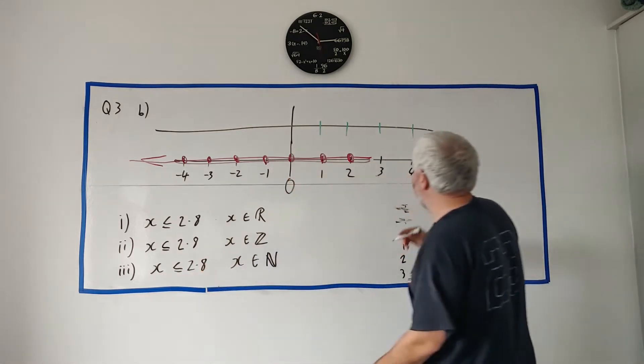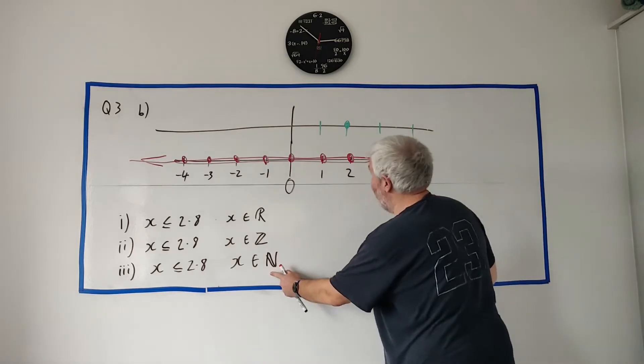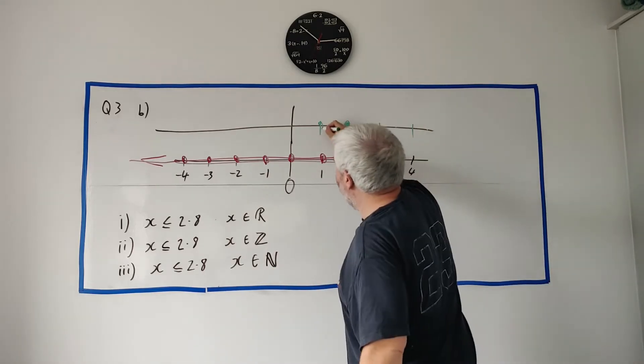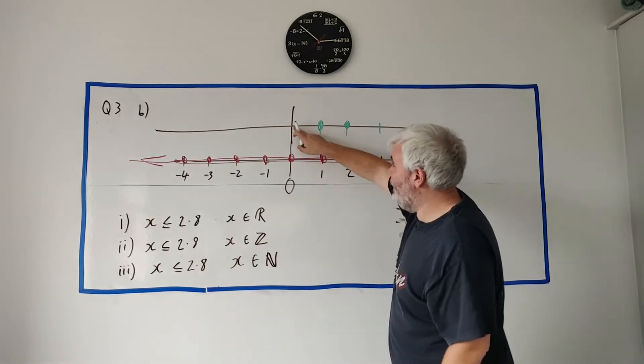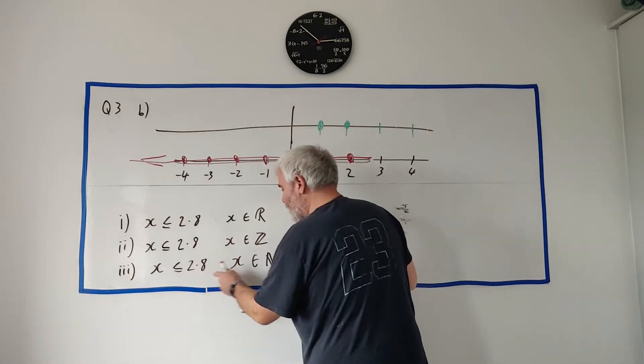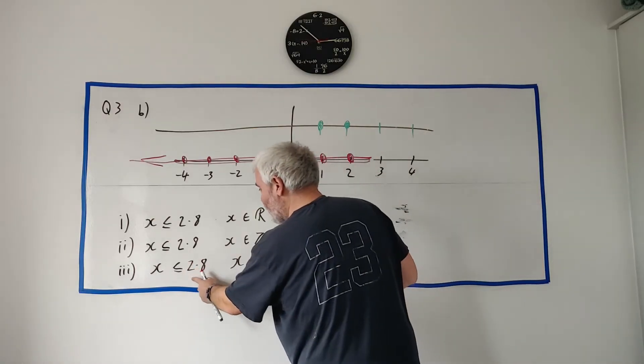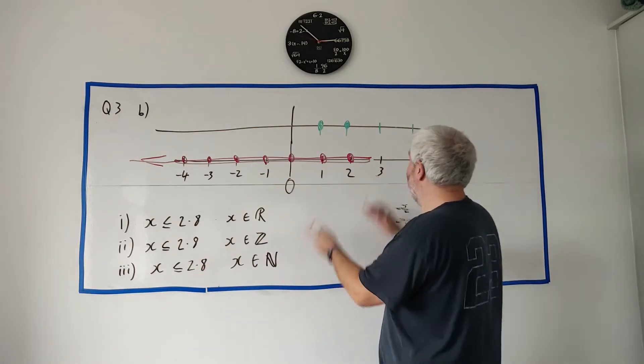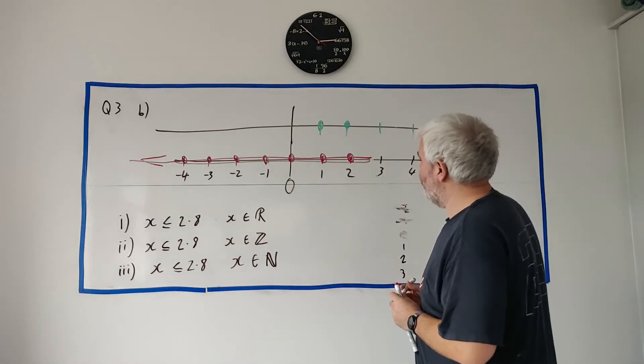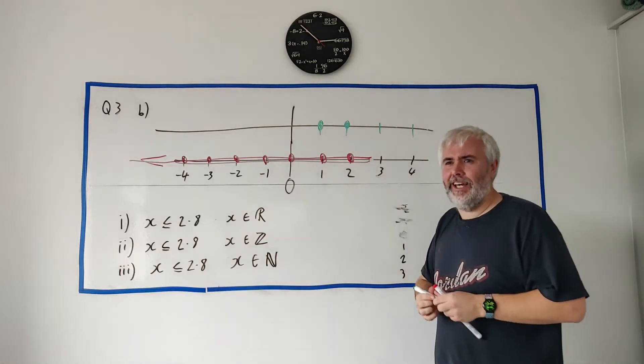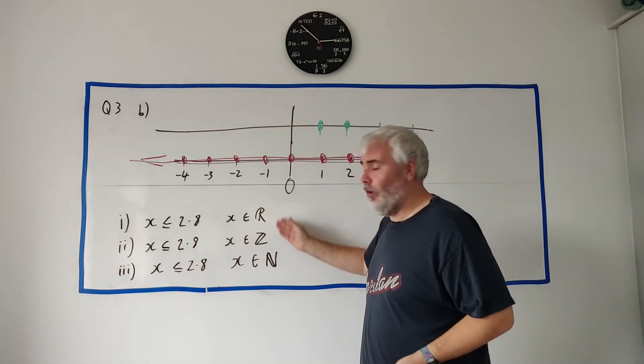How we draw this last one? x less than 2.8. Well, 2 is less than 2.8 and 2 is a natural number. 1 is less than 2.8 and 1 is a natural number. 0 is less than 2.8 and I don't think it's a natural number. And minus 1 is less than 2.8 but it's definitely not a natural number. That's it. That's just these two numbers here. That's how you would draw that. It's a weird sort of question. You really just need to understand what all of these are.